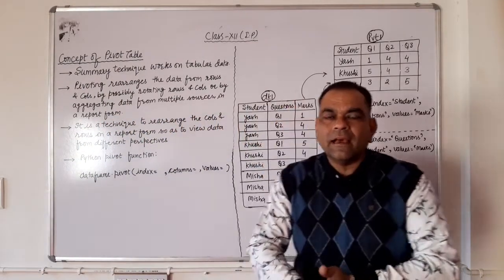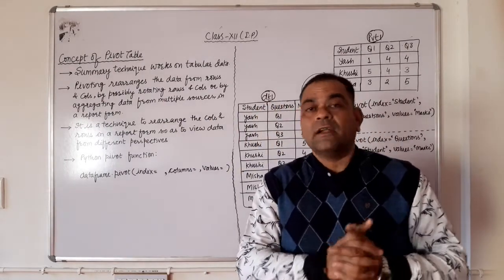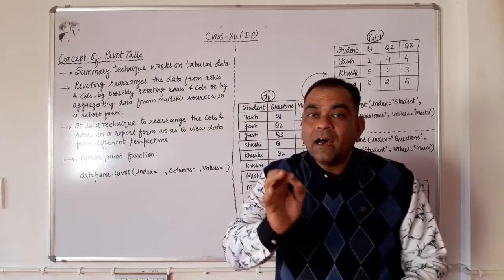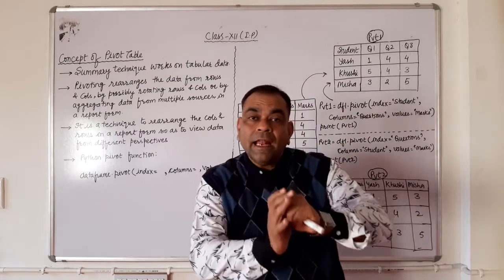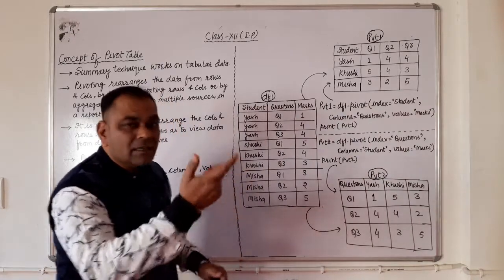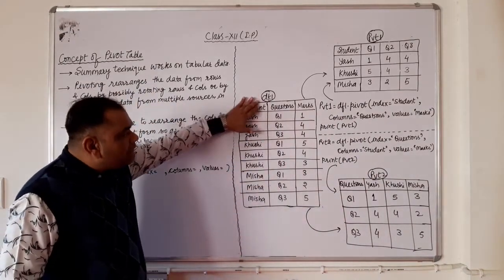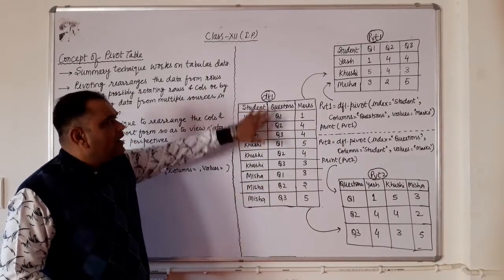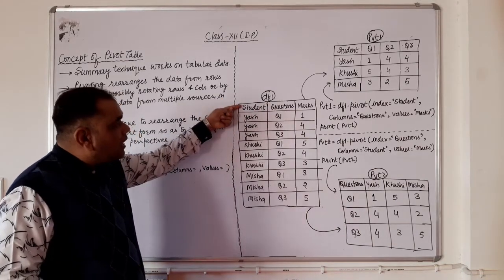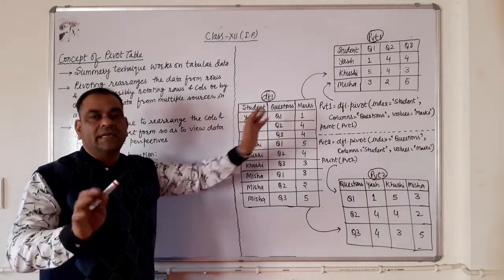Good afternoon. In this video lecture we will discuss pivoting — what is pivoting and what is a pivot table. In a data frame, we can see a data frame from different angles. I am going to start the concept by taking an example. The data frame is named df1, where student is the index and question and marks are the two columns.